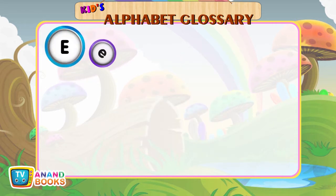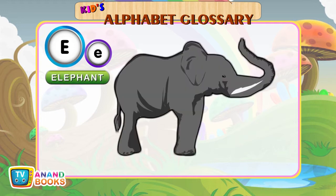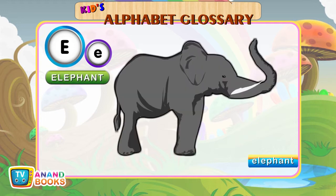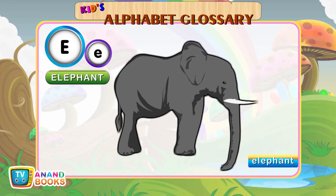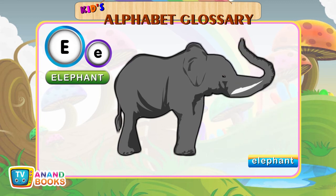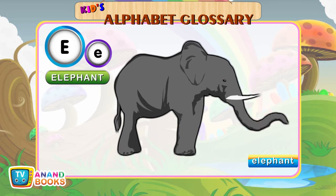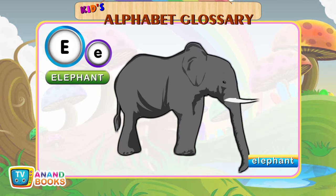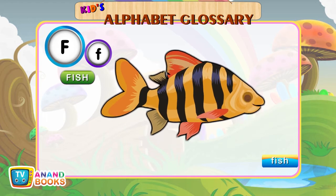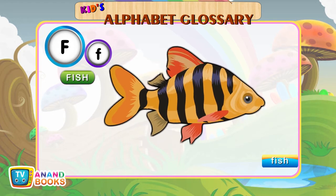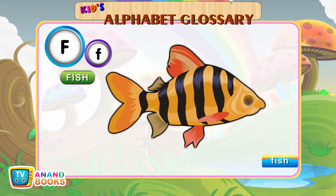E for Elephant. E-L-E-P-H-A-N-T. Elephant. F for Fish. F-I-S-H.